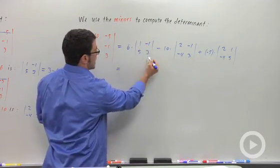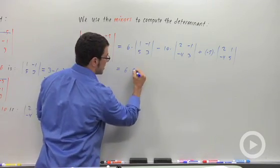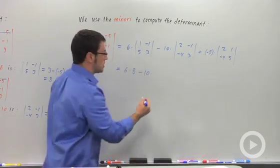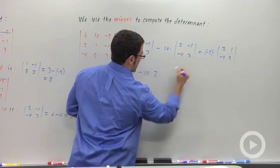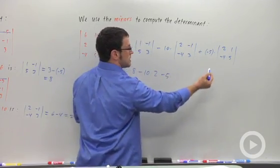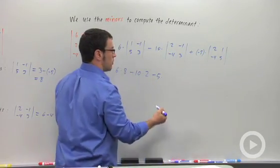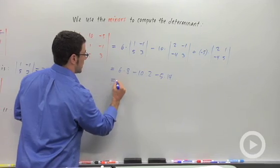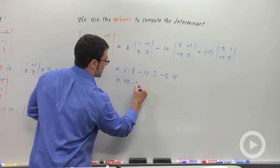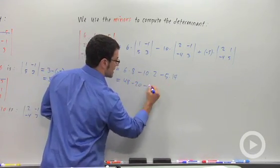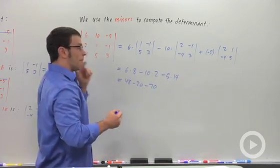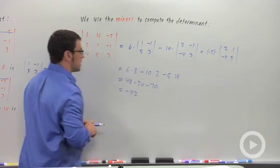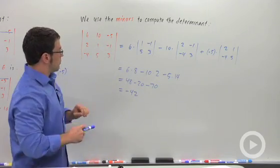And then, it's 6 times this determinant. We already calculated that to be 8. Minus 10 times this determinant, which we already calculated to be 2. Plus negative 5 is negative 5 times, and now this determinant is 10 minus negative 4. 10 plus 4, 14. So let's see what we get here. We've got 48, minus 20, minus 70. So, that's 48 minus 90, negative 42. So, the 3 by 3 determinant is negative 42.